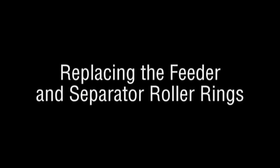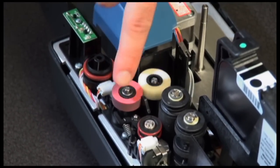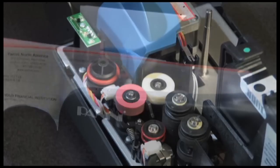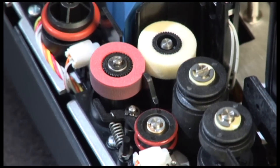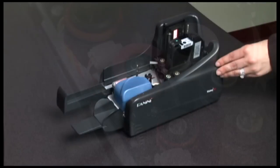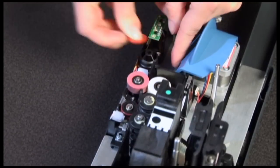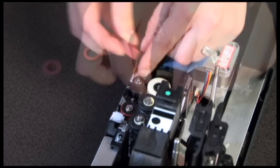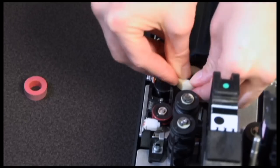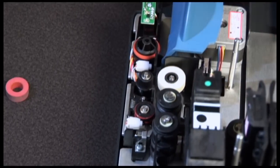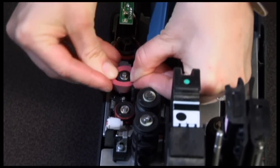Replace the feeder and separator roller rings after extended use is necessary due to normal wear. This can be determined by an increase in false feeds or double feeds. There are a few basic steps in changing the feeder and separator roller rings. Remove the inner and outer covers. Carefully lift the rings off the rollers. Install the new separator rings on the rollers by pressing down on the surface of the rings. Make sure the rings are fully installed on their shafts and are flat.